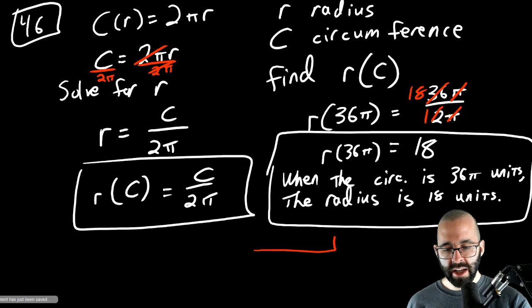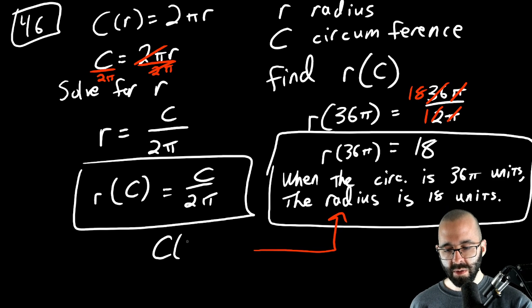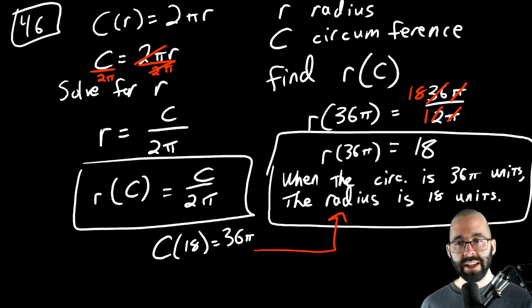These are all of our answers. Another very related answer to this one, right, is if r of 36π equals 18, that means c, the function c, when the radius is 18, circumference is 36π. That's the relationship between functions and their inverse with these applications. Let me know if you have any questions.